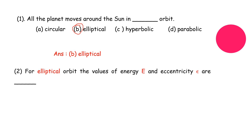The next question: for an elliptical orbit, what are the values of energy E and eccentricity epsilon? Eccentricity is the measure of how non-circular the orbit of a body is.